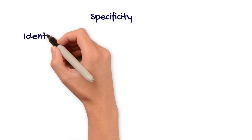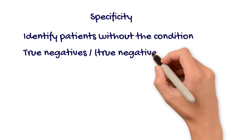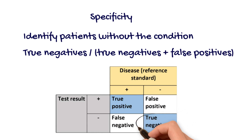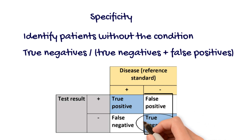Specificity, on the other hand, is a test's ability to correctly identify patients without the condition. Specificity is calculated by dividing the number of true negative cases identified by the test by all the negative cases confirmed by the reference standard. A test with high specificity will correctly identify most people who do not have the disease and will have few false positives. False positives are people who do not have the disease but test positive.